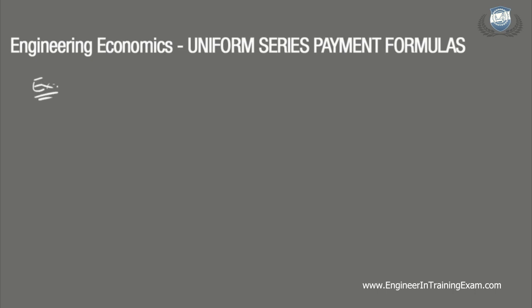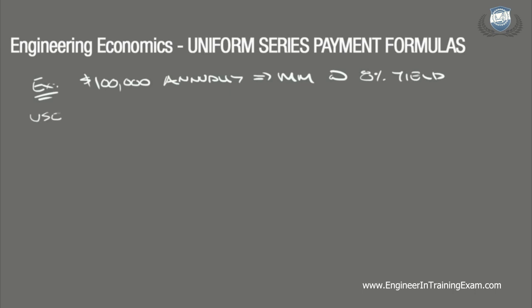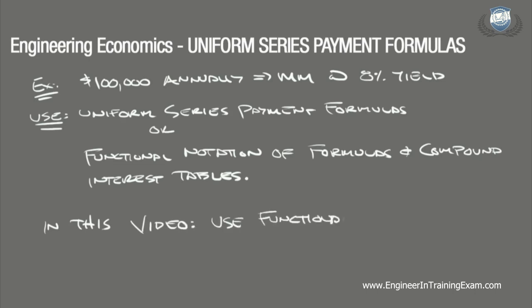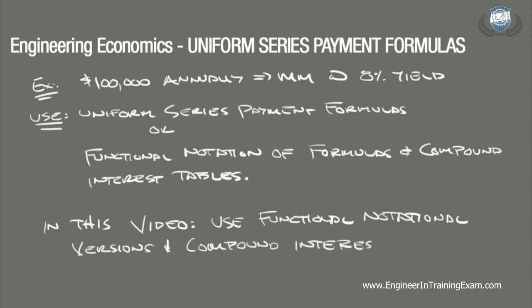Let's run through an example. A local community college invests $100,000 of their yearly revenues into a money market account at the end of each year. If the account has an 8% annual yield, how much money will be in the savings after 8 years? The goal is to determine what payment would be equivalent 8 years down the road. In this video, we will solve using the uniform series compound amount formula written in functional notation and the compound interest tables.